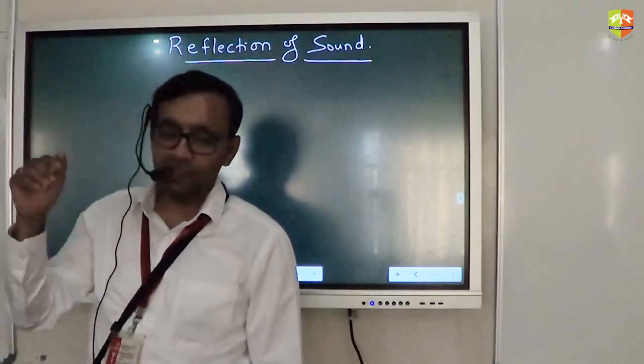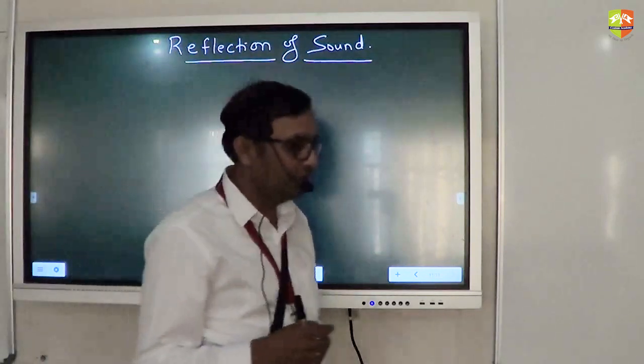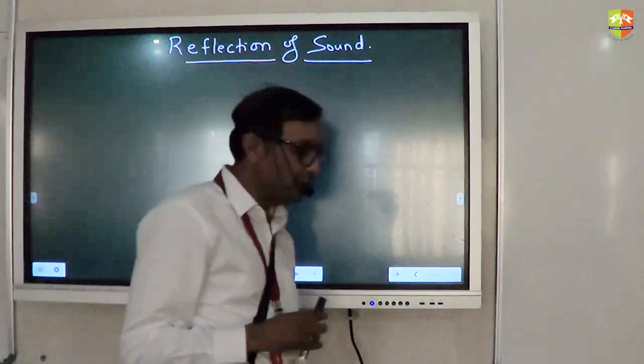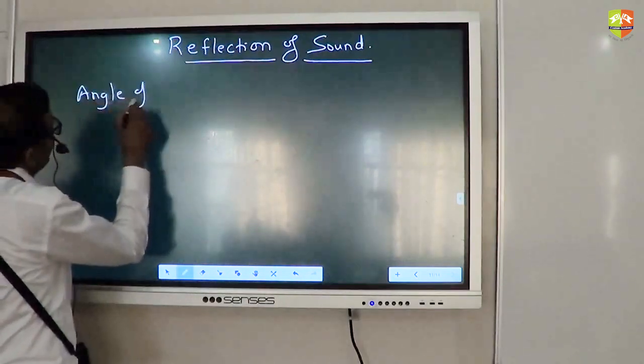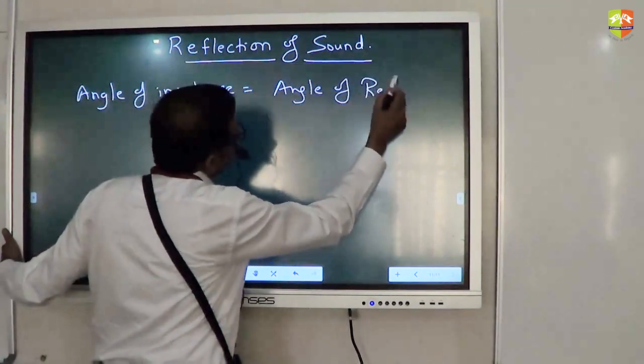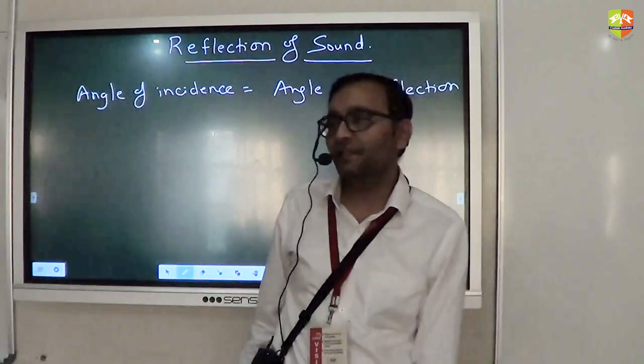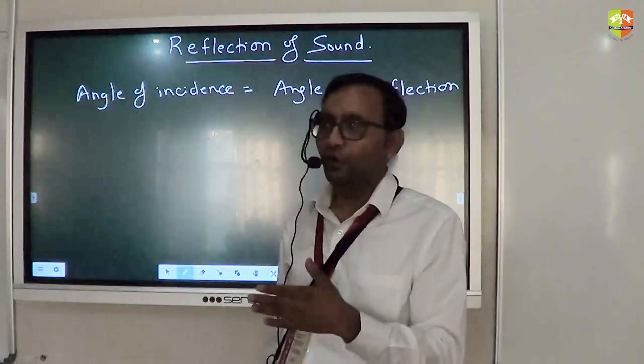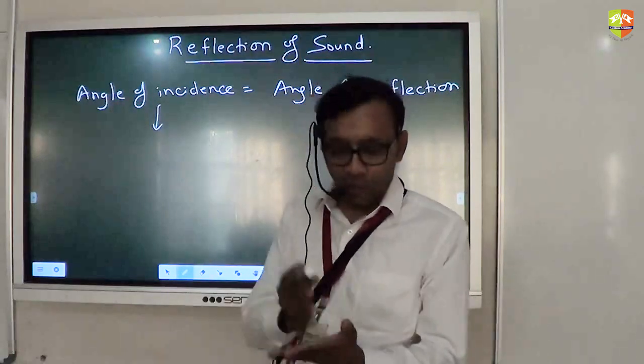Please write down, when sound gets reflected, the angle of incidence should be equal to angle of reflection. Angle of incidence is equal to angle of reflection. So also please write down, angle of incidence is between the incident direction and the normal at the point of incidence.